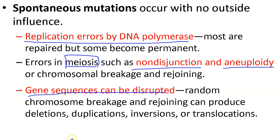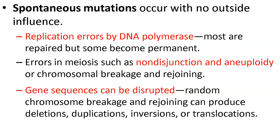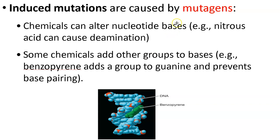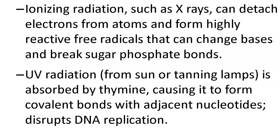Induced mutations are caused by mutagens. Mutagens are chemicals that can alter nucleotide bases. For example, benzopyrene adds a group to guanine and prevents base pairing — this is an induced mutation. X-rays can also induce mutations. UV radiation from the sun or tanning lamps is absorbed by thymine and causes it to form covalent bonds with adjacent nucleotides, which disrupts DNA replication. UV radiation has a very real effect on an organism's body.